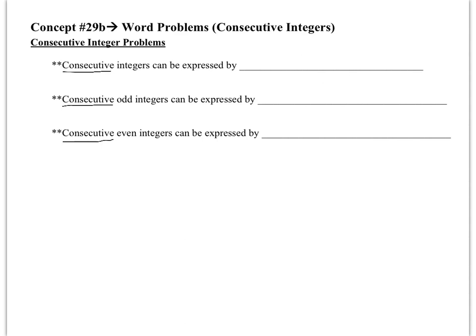So consecutive integers would just be integers one after the other. For example, 5, 6, 7 — those are consecutive. I could have negative 8, negative 7, negative 6 — those are consecutive integers. So it's just one after the other.